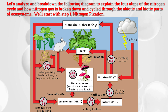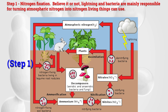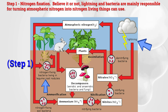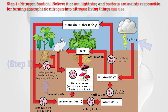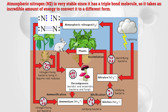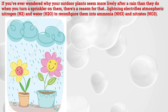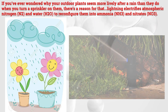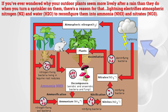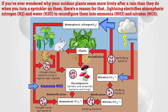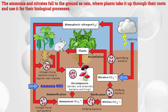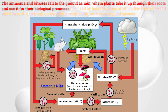Step one: nitrogen fixation. Believe it or not, lightning and bacteria are mainly responsible for turning atmospheric nitrogen into usable forms. Atmospheric nitrogen, or N2, is very stable since it has a triple bond, so it takes an incredible amount of energy to convert it. If you've ever wondered why your outdoor plants seem healthier after rain, there's a reason — lightning electrifies atmospheric nitrogen (N2) and water (H2O) to reconfigure them into ammonium (NH3) and nitrates (NO3). The ammonium and nitrates fall to the ground as rain, where plants take it up through their roots.